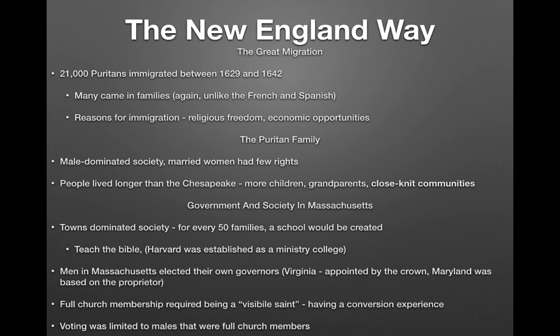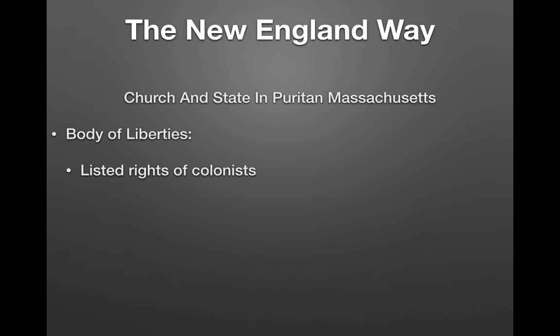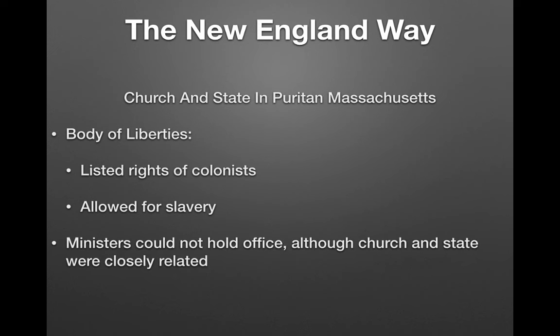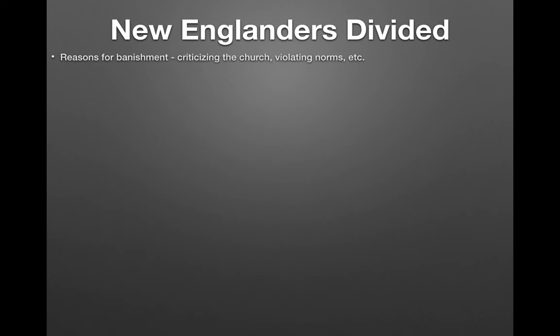The Bodies of Liberties listed rights of colonists and did allow for slavery, so slavery existed in the north as well as the south. Ministers could not hold office, although church and state were closely related. Puritans did not believe in religious toleration — they established Massachusetts Bay as a place specifically for them to practice their religion.